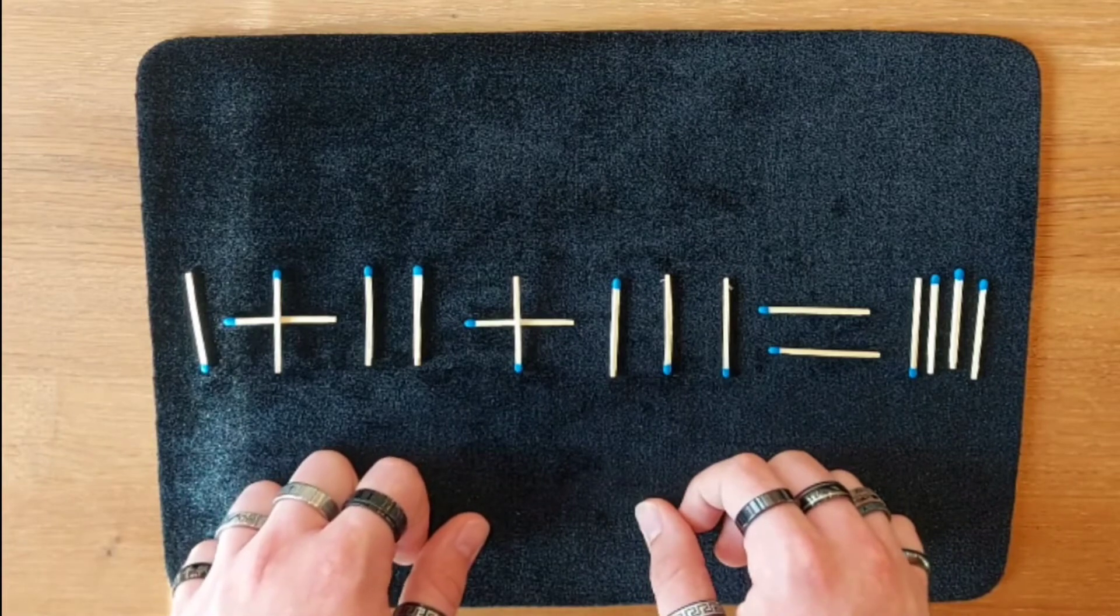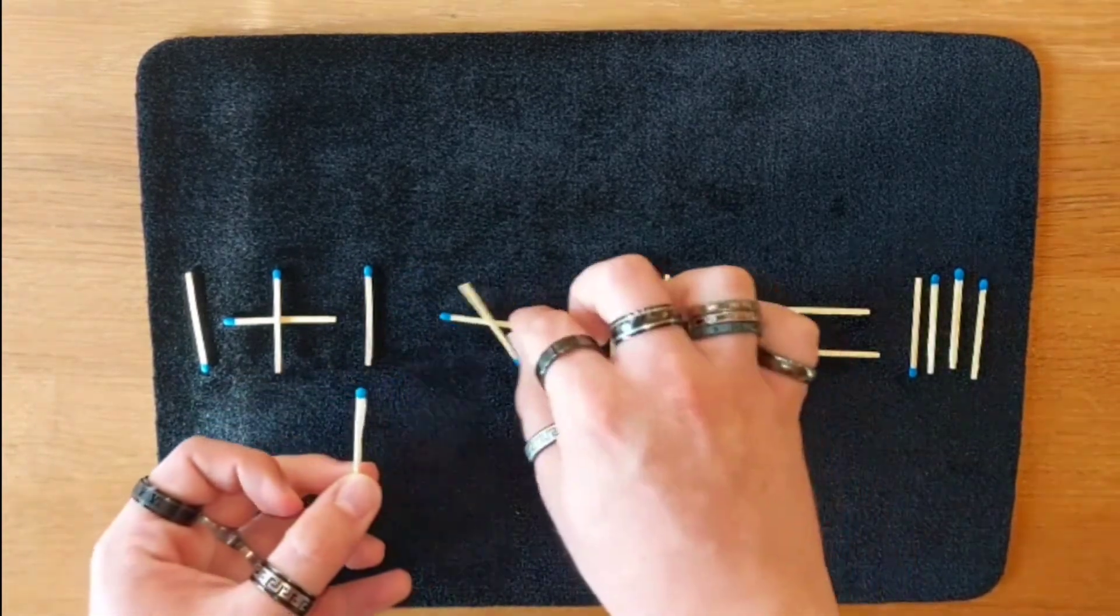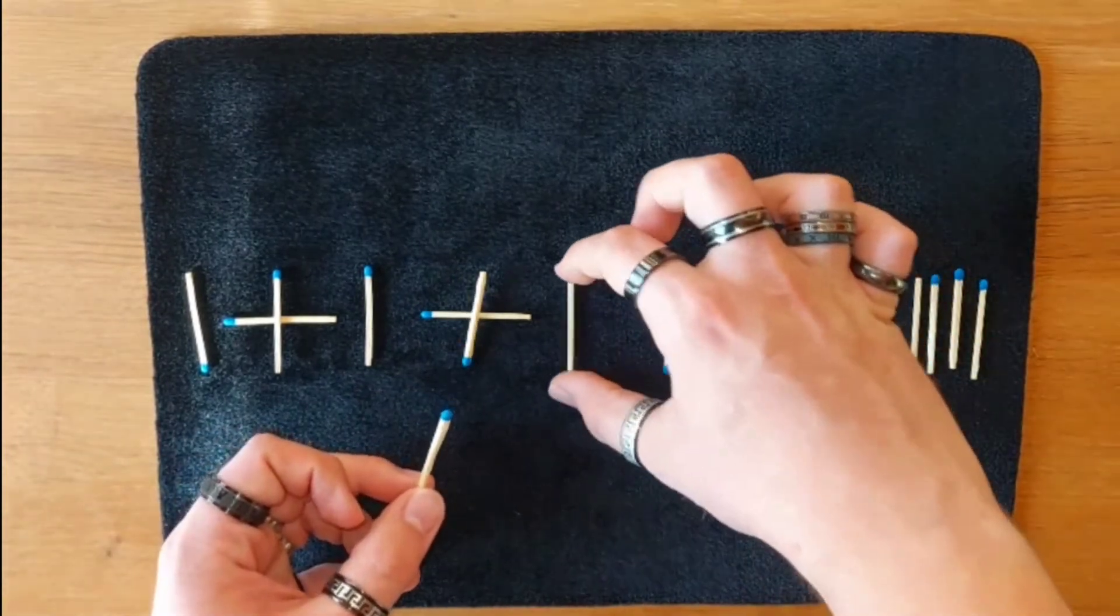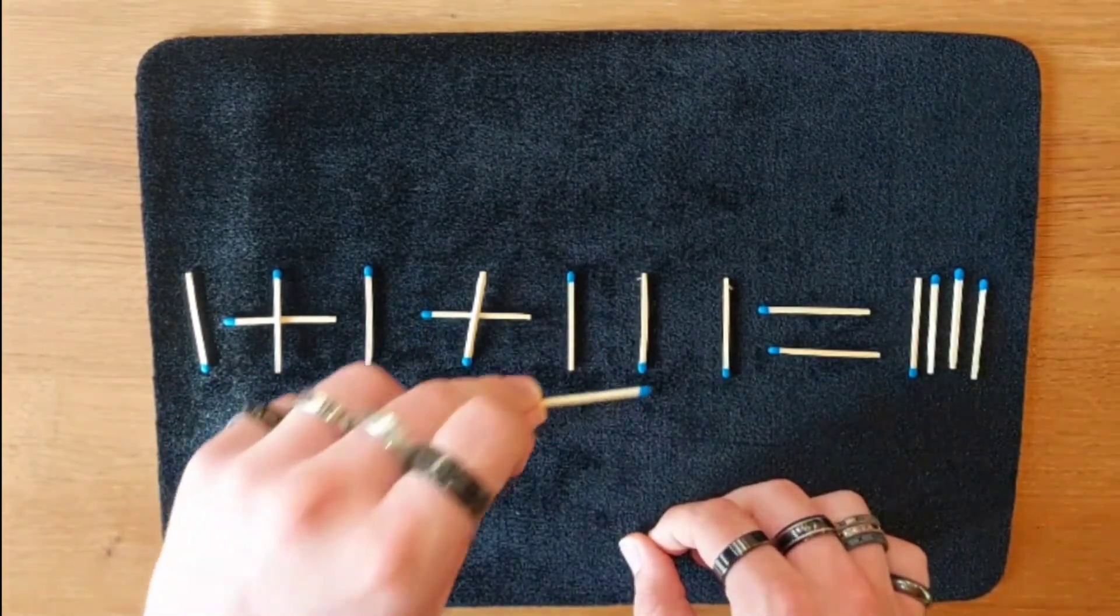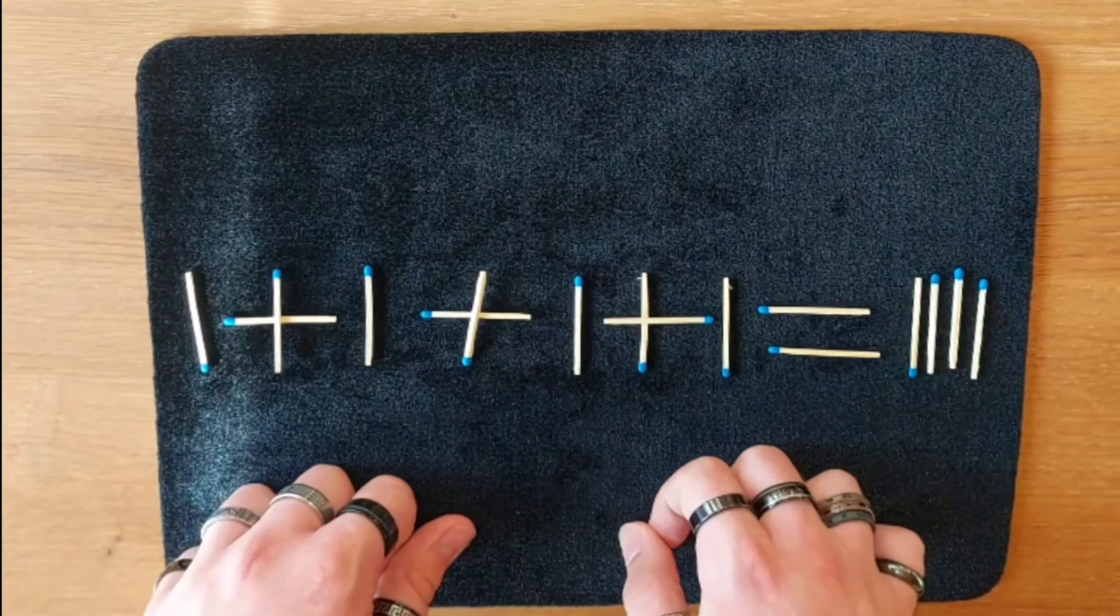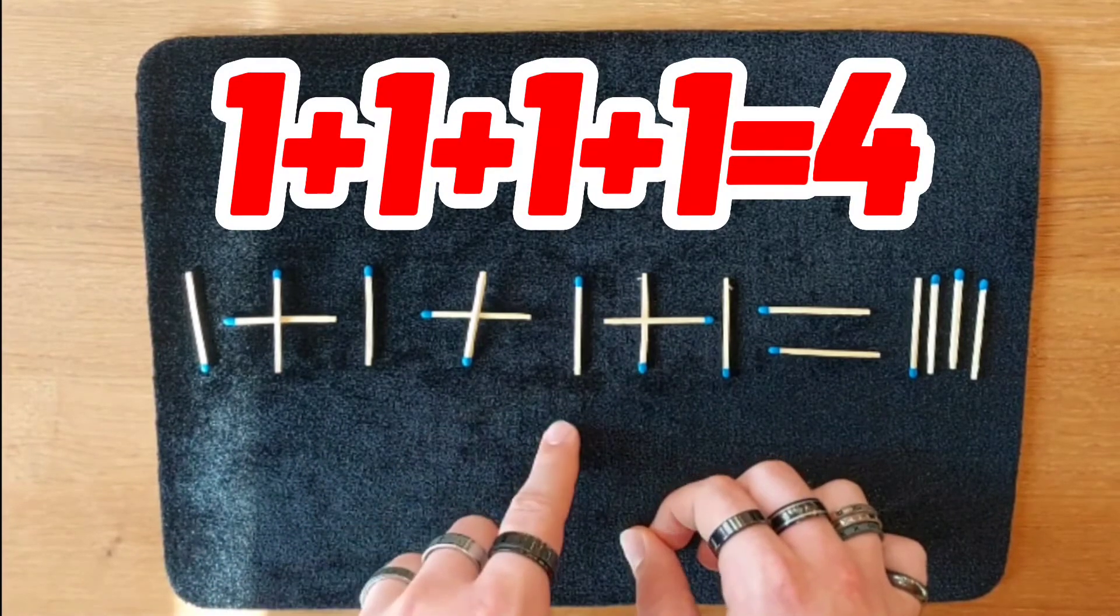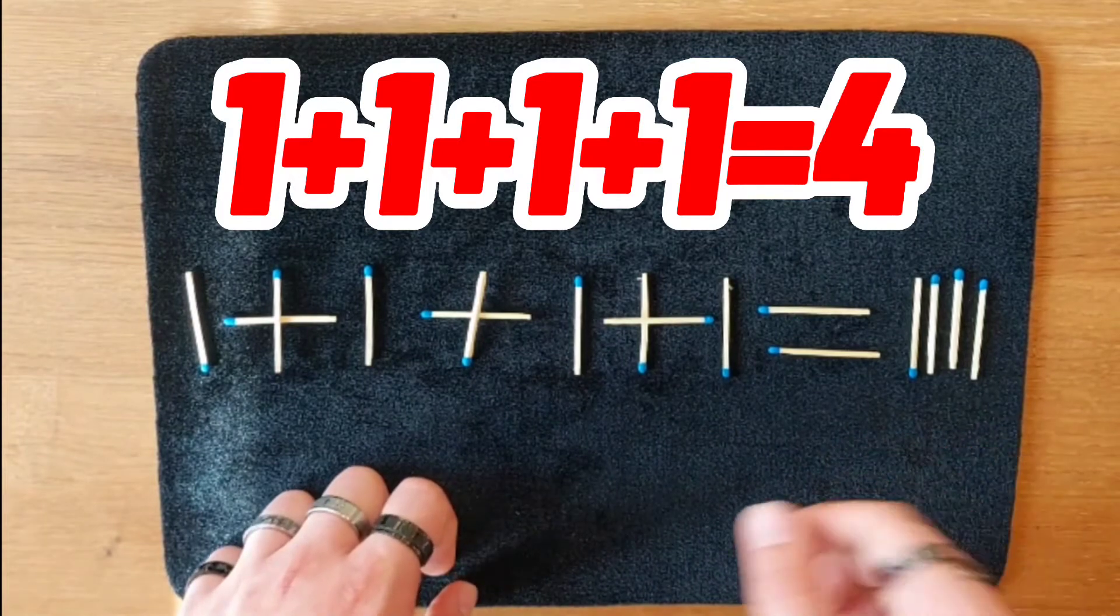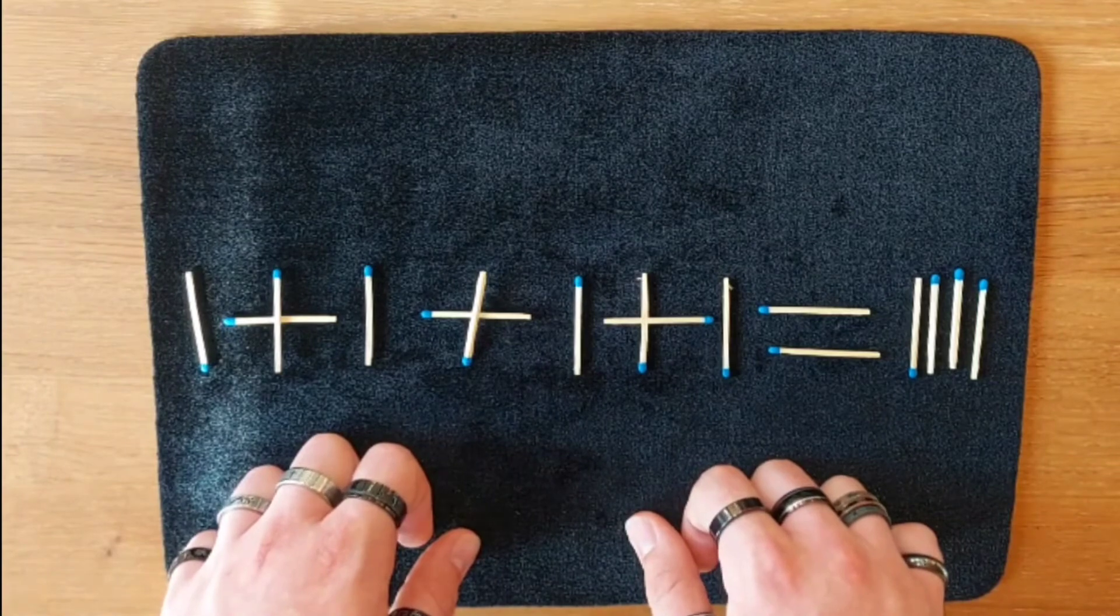So we just take the let's say the two out of that point of the equation just push it a little bit to the left which doesn't count as moving one match. And if we now put the match from here across on the middle of the tree you can now see that the equation now is 1 plus 1 plus 1 plus 1 equals 4. Which is completely correct and the perfect solution for this incredible riddle.